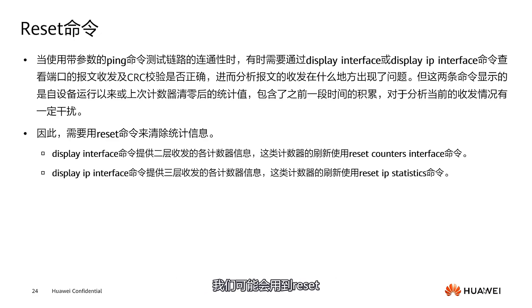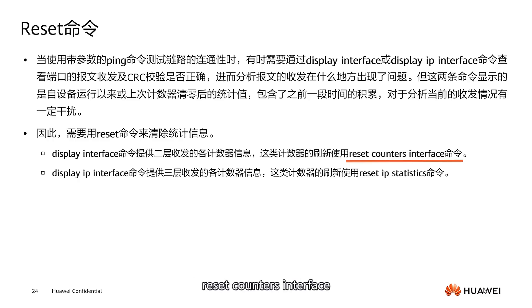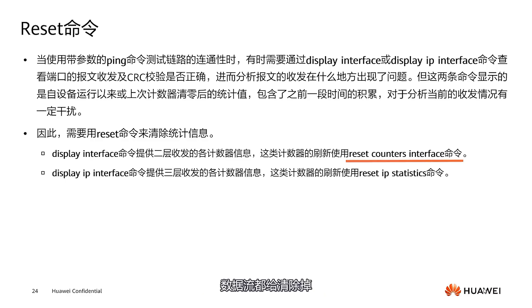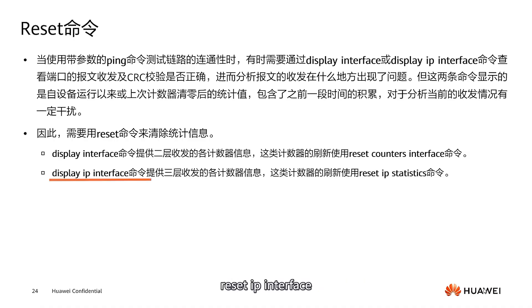Where there are only five users, any association is possible and they can go online easily, but it's underutilized. If these two areas are close, you can implement load balancing. If they are far apart, it's advisable to deploy another AP in that area to distribute the traffic. This method can solve the problem where terminals cannot associate.